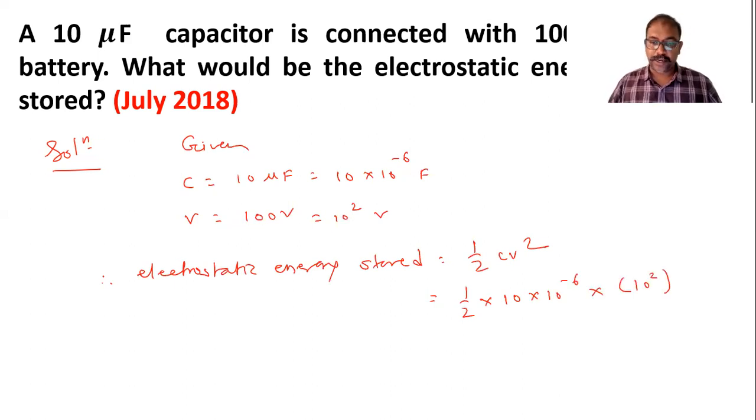10/2 is 5, giving 5 × 10⁻⁶, and 10² squared is 10⁴. Therefore, we get 5 × 10⁻² joules. This is the energy stored in the capacitor.